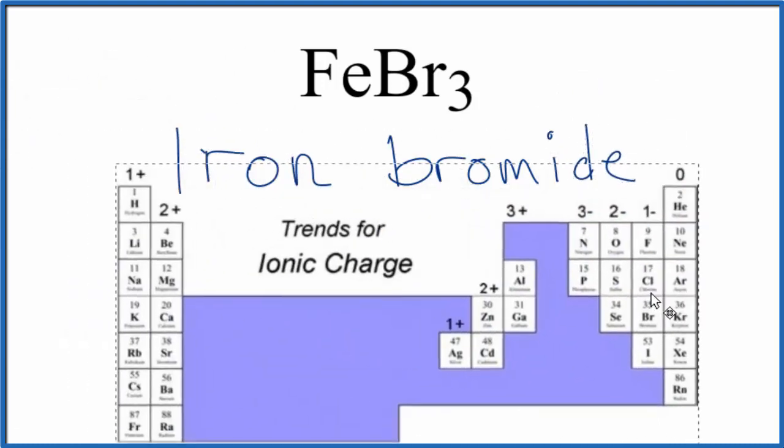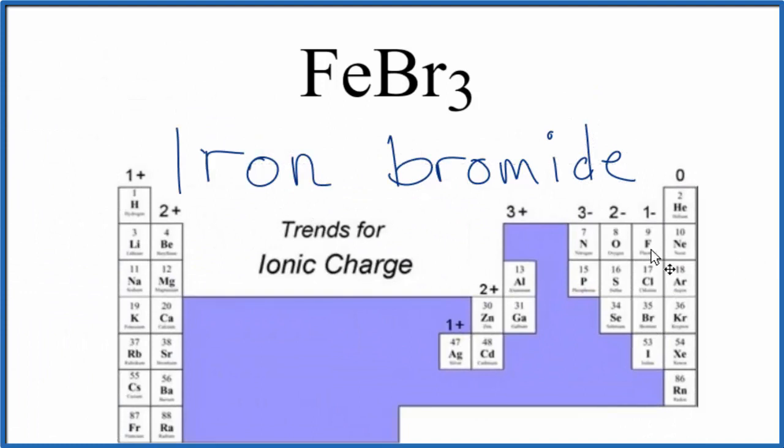Bromine, if we look on the periodic table, that's right here, group 17, called the halogens. It has a 1 minus ionic charge.